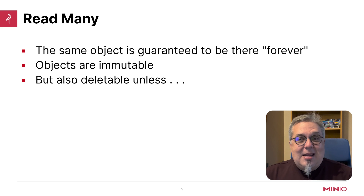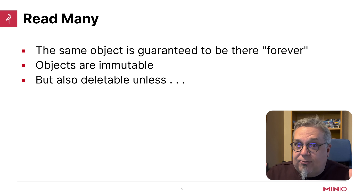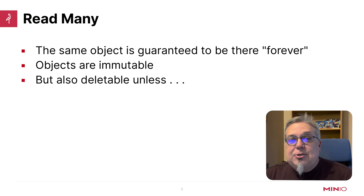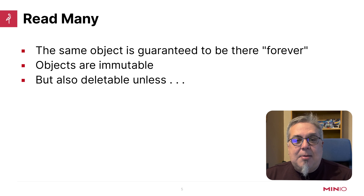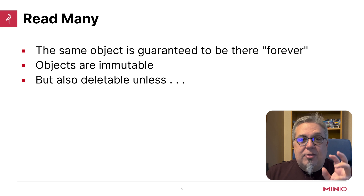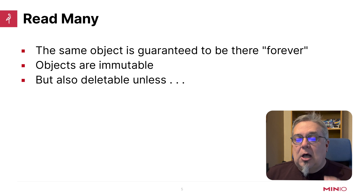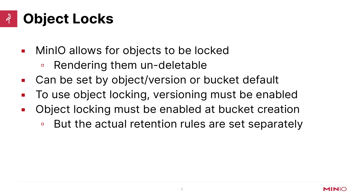As far as read many is concerned, the same object is guaranteed to be there essentially forever. Objects are immutable. Once I've read it one time, I'm going to keep reading the same object in the same namespace. However, these objects are deletable unless you turn on some object locks, also known as object retention.